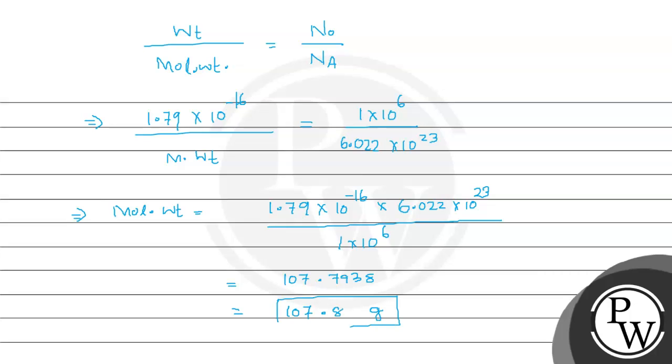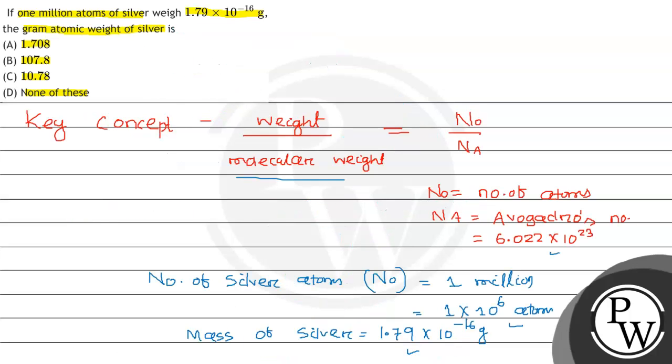This is the molecular weight, or we can write it as the gram atomic weight of silver. So the value we found, 107.8, is given in option B.